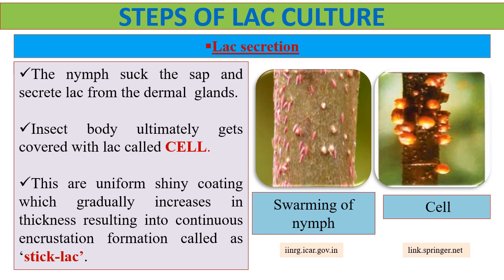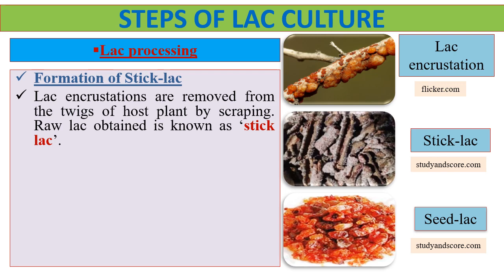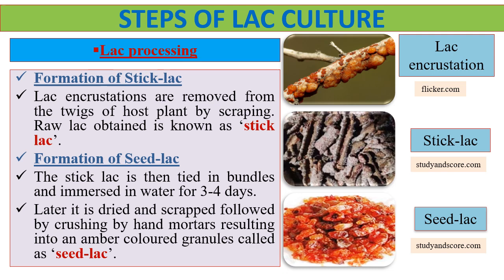The final step in lac culture is lac processing. The stick lac formed is removed from the twigs of the host plant by scraping. The raw lac obtained is known as stick lac. The stick lac is then tied in bundles and immersed in water for three to four days. Later, it is dried and scraped, followed by crushing by hand mortars, resulting in amber-colored granules called seed lac. On the other side, we can see the picture of lac encrustation, then stick lac, and seed lac.